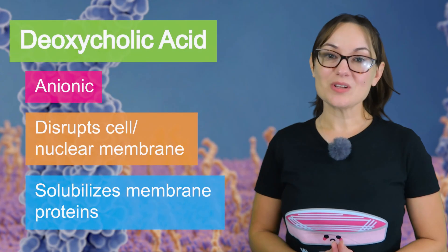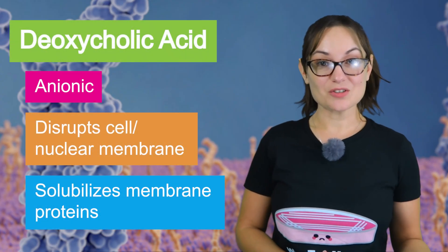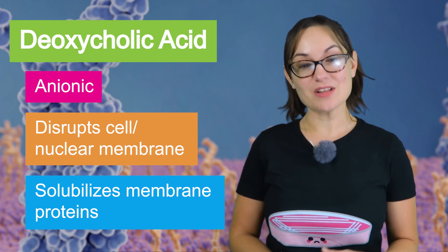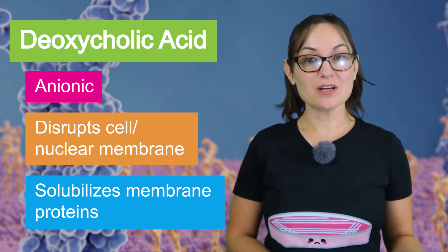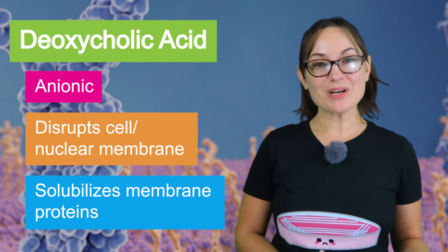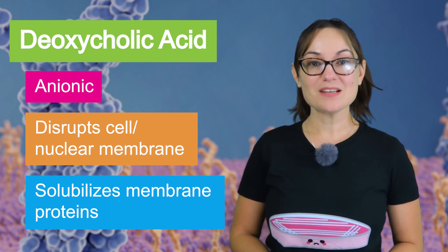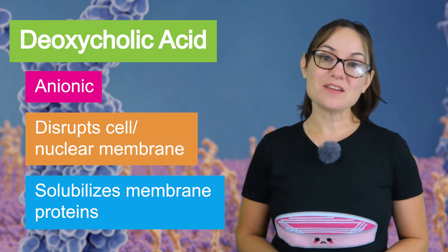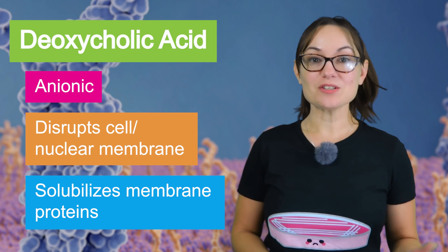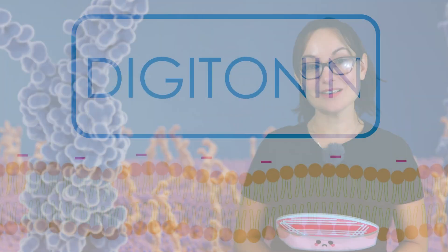Deoxycholic acid, which is an anionic detergent, is often used in cell lysis buffers like RIPA buffer. It disrupts cell and nuclear membranes and is used to solubilize membrane proteins. This detergent is even used in the biotech industry to purify membrane proteins for vaccine production.